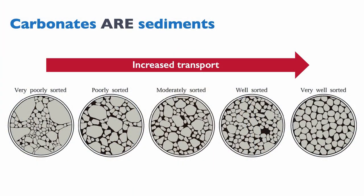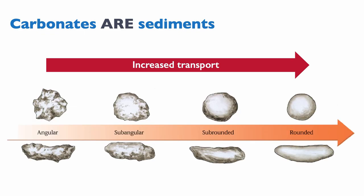Let me give you a couple of examples. You've learned in clastics that the more you transport a sediment, the better sorted it becomes. Well, great news — it's also true for carbonates. The more you transport a carbonate sediment, the more sorted it will be. So the higher the hydrodynamic energy of the system in which the sediment is deposited, the greater the sorting will become. It's also true that the greater the transport, the greater the rounding of the grains will be, and that's both for clastics and for carbonates.